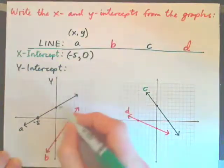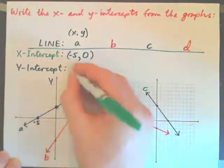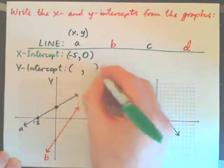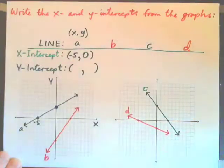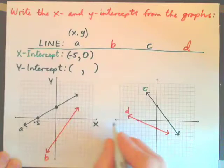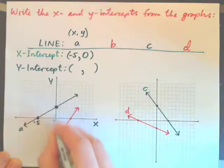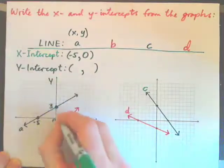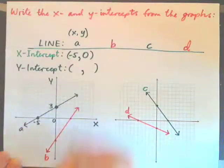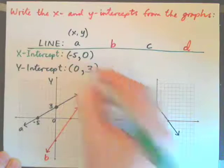Now give the y-intercept for this line, this point here. And write it down as an ordered pair. For this point here, the x-value is 0. And the y-value is 3, right? 1, 2, 3. So this point is 0, 3.